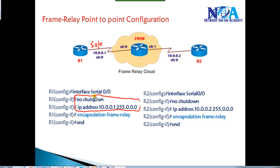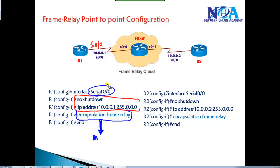The default encapsulation on a serial interface is HDLC, but we need to change this encapsulation to frame relay. There is no need to do any mapping here because we are completely relying on dynamic mapping done by the service provider. We just need to ensure we are using encapsulation frame relay on Router 1's S0/0 interface. The same configuration goes on the other side as well — encapsulation frame relay, bring the interface up, and assign the IP addresses.